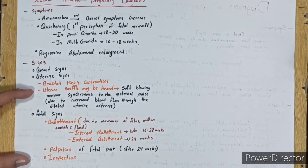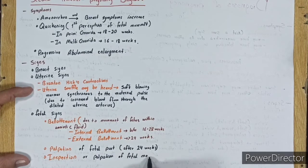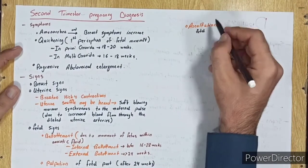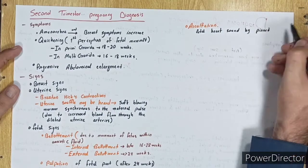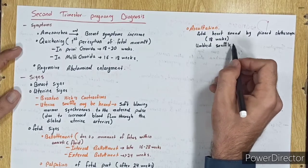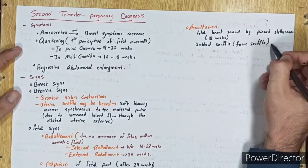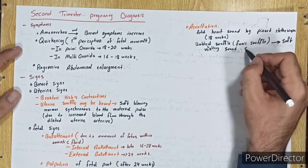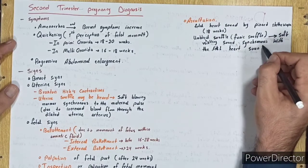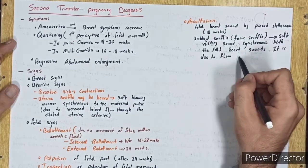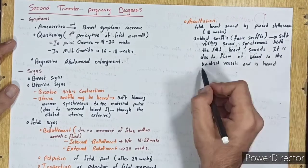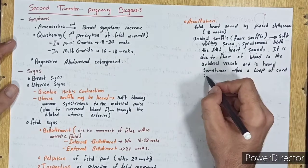Inspection or palpation of fetal movement. Auscultation of fetal heart sounds by Pinard. Funic soufflé is due to flow of blood in the umbilical vessels and is heard sometimes when a loop of cord is in close proximity to the anterior uterine wall.